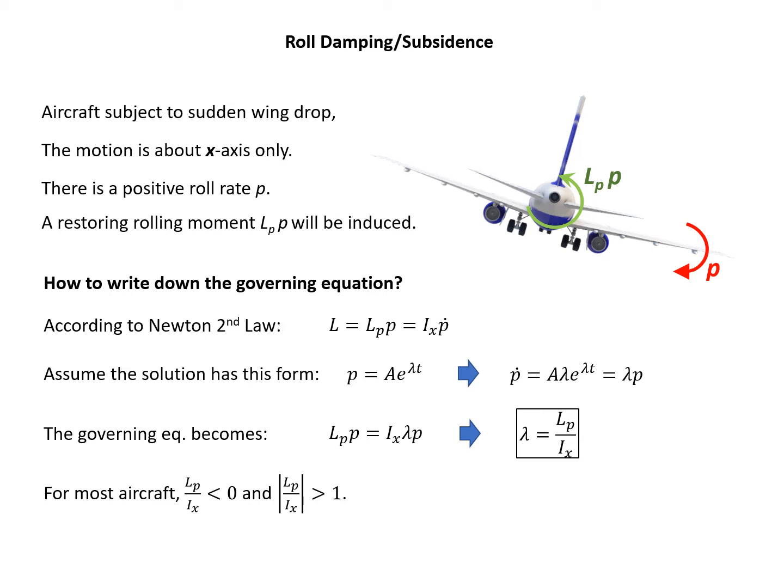For most aircraft, Lp divided by Ix is negative, less than zero, and its magnitude is larger than 1. If it's negative, the power of E is negative, meaning the curve converges, so the mode is stable. If it's larger than 1, it means it's beyond critical damping. This is a non-oscillatory mode and it's heavily damped.